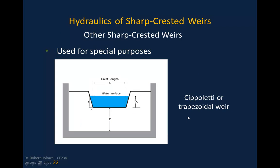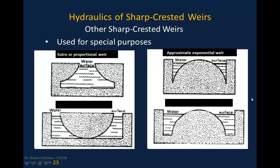There are other types of sharp-crested weirs with similarly developed equations — including the Cipoletti or trapezoidal weir, proportional weirs, and approximate exponential weirs. These have specific applications, perhaps at wastewater treatment plants or similar facilities.